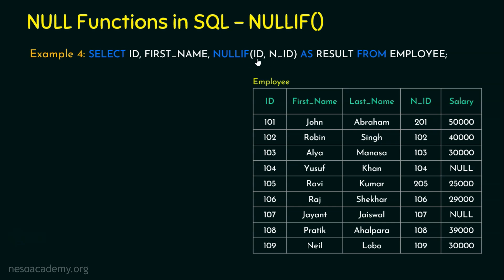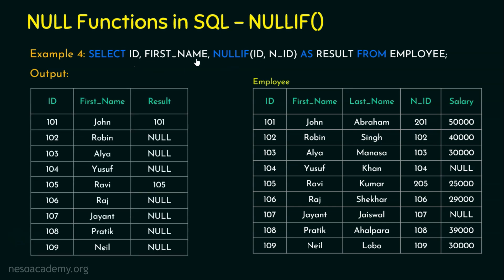When we talk about NULLIF, it compares two expressions. If both expressions are the same — i.e., if both are matching — it returns NULL. NULLIF(id, new_id) means: if id equals new_id, return NULL; otherwise, return the first expression, which is id. So the output contains three columns: id, first_name, and result. For the first row, id is 101 and new_id is 201 — they are different, so it returns the first value, which is 101. For the second row, both are 102, so they match and it returns NULL. Similarly, for the third row both are 103, so it returns NULL.